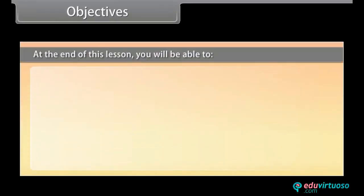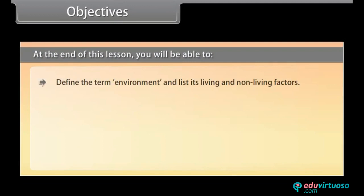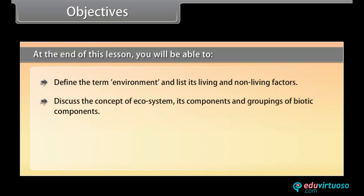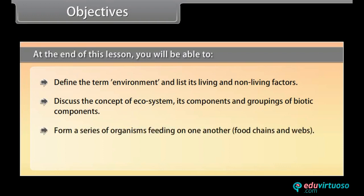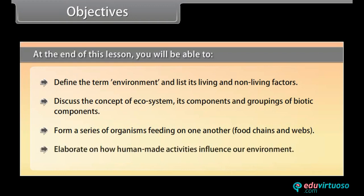At the end of this lesson, you will be able to define the term environment and list its living and non-living factors, discuss the concept of ecosystem, its components and groupings of biotic components, form a series of organisms feeding on one another — food chains and webs — and elaborate on how human-made activities influence our environment.